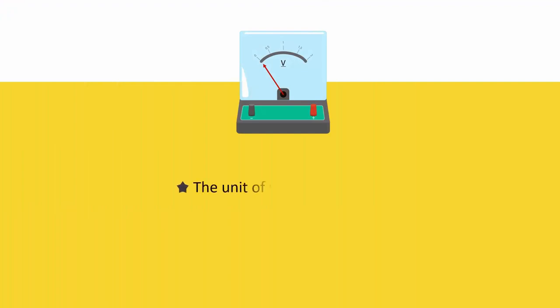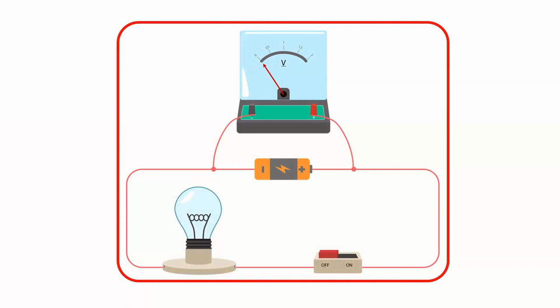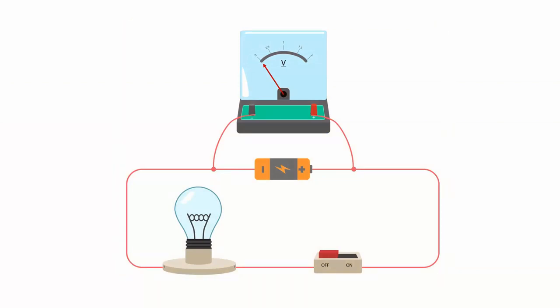The unit of voltage is the volt. This is measured by an instrument called a voltmeter. The voltmeter is connected parallel with the circuit.